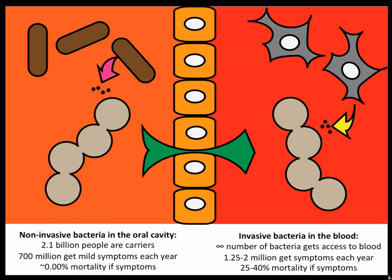It is also interesting because at some frequency, it actually gets into the blood. This actually happens quite often — pretty much every time you brush your teeth, bacterial pieces enter your blood. In general it's not a problem, but there are about 1.2 million severe infections per year, mostly in the third world. Once established in blood, the mortality rate is between 25% and 40% depending on the study.